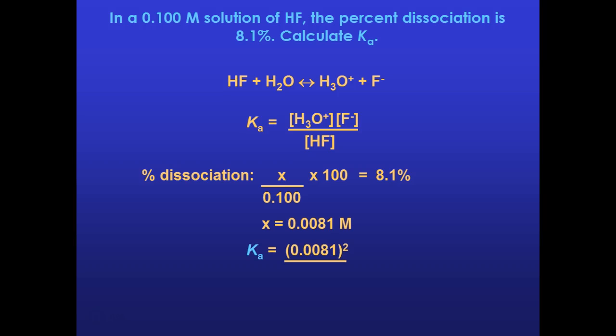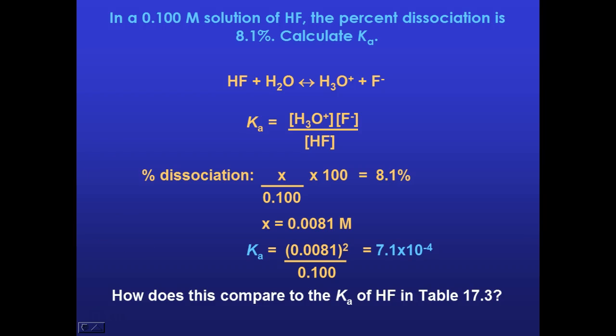So I would take the 0.0081 squared, and I would divide it by that original concentration of HF, and I get that the K value would be 7.1 times 10 to the negative 4. And I'm going to ask you to go look and see in your chart and see how that compares. I believe it's going to be pretty reasonable for that value.